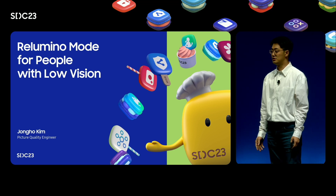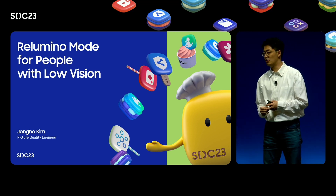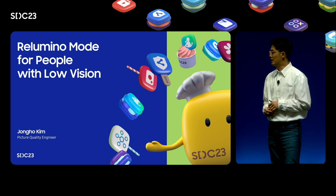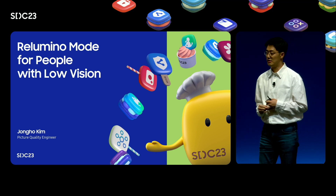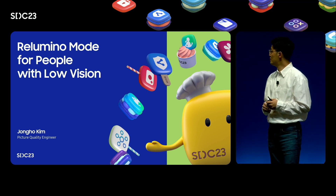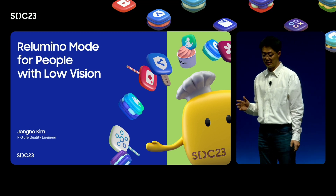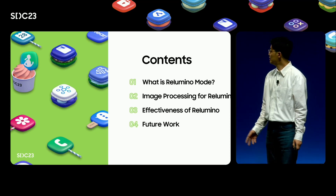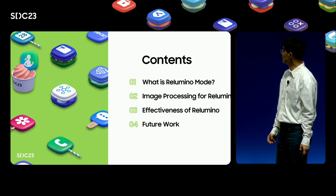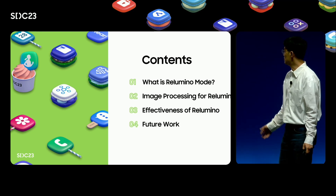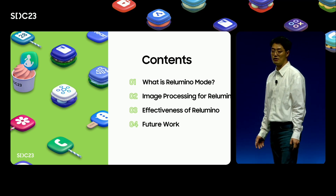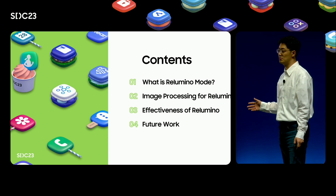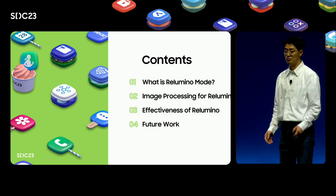Rilumino mode is a viewing assistant feature that helps people with low vision watch TV. The idea of people with low vision watching TV may be unfamiliar. So now we'll talk about why it is necessary and how it was developed. Here's what we'll talk about today: how Rilumino mode works, the algorithm, effectiveness, and a conclusion.